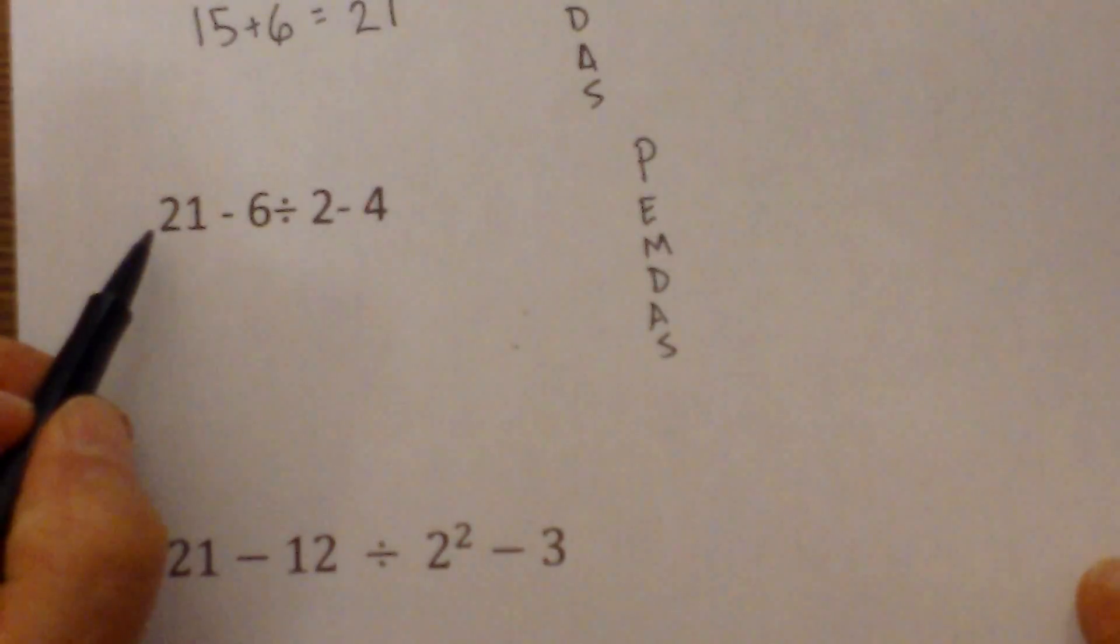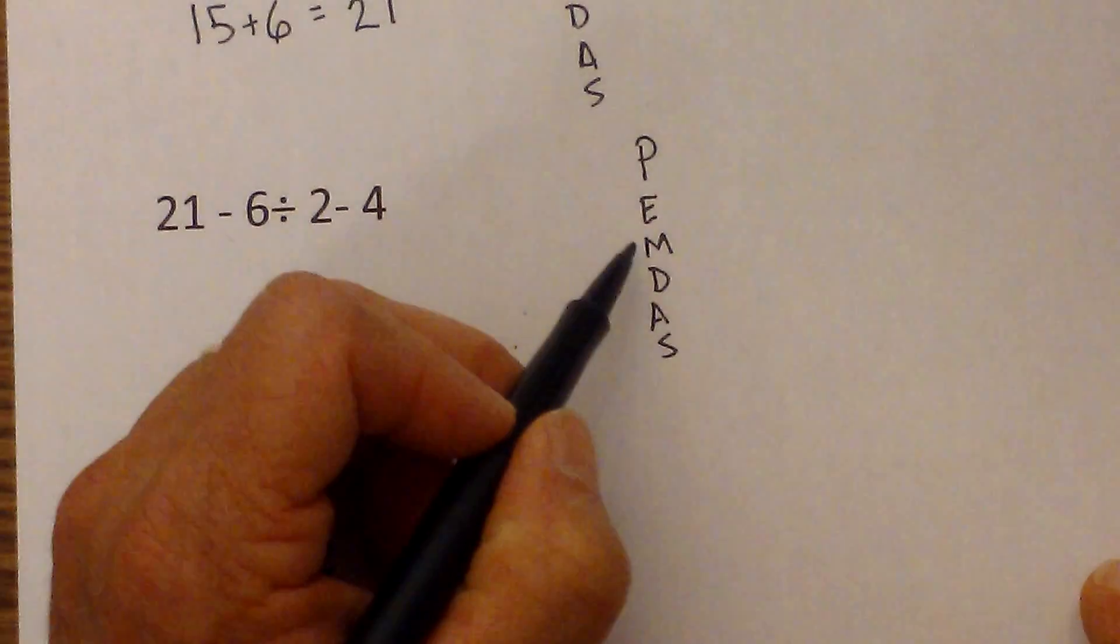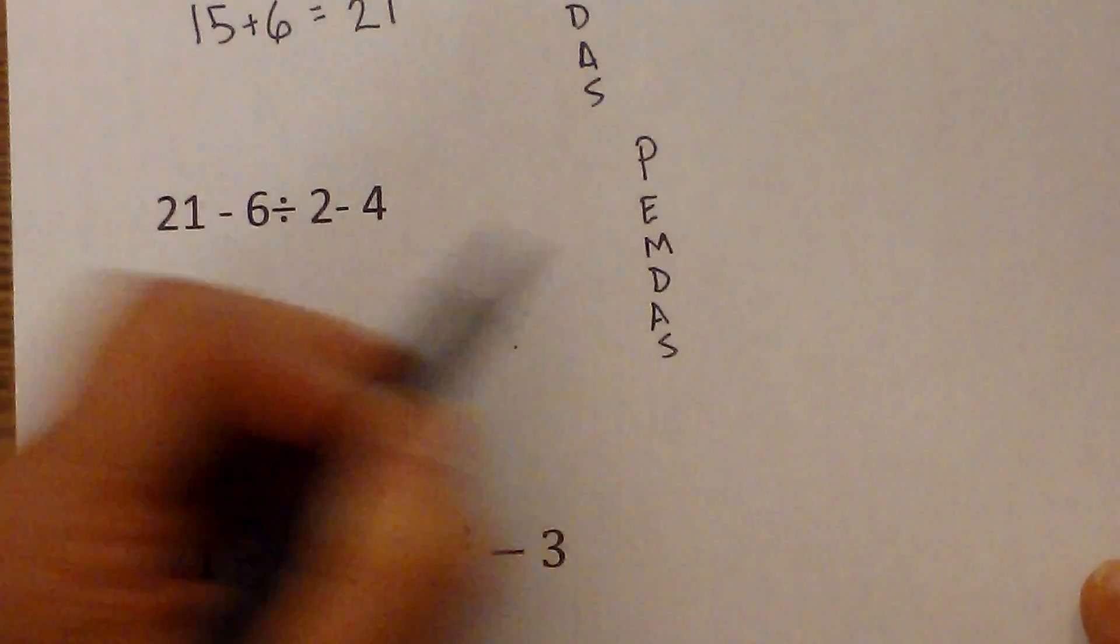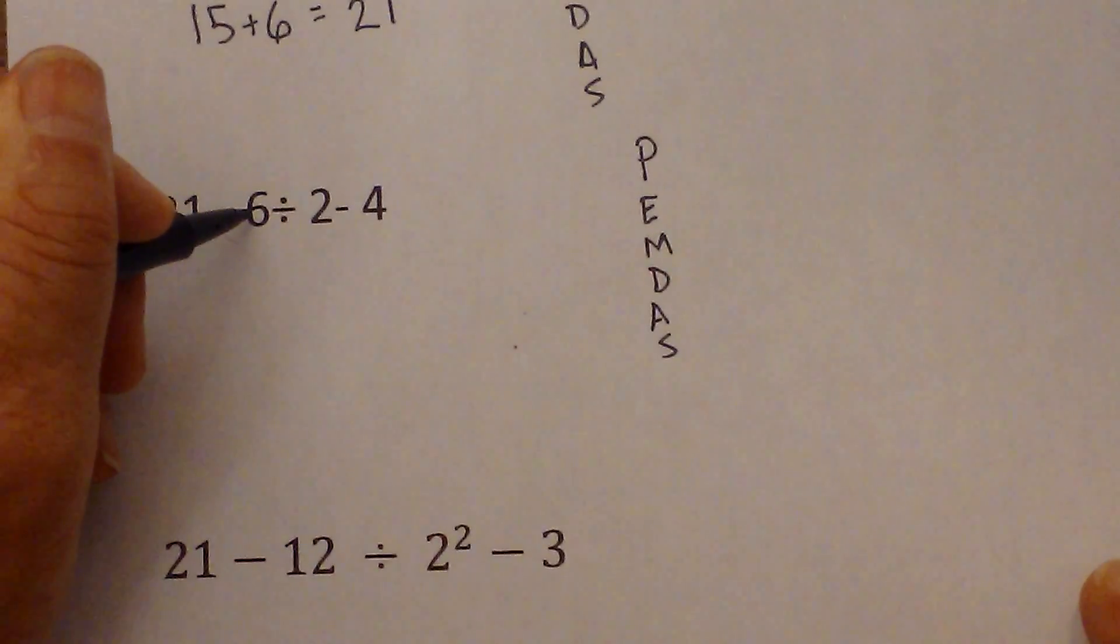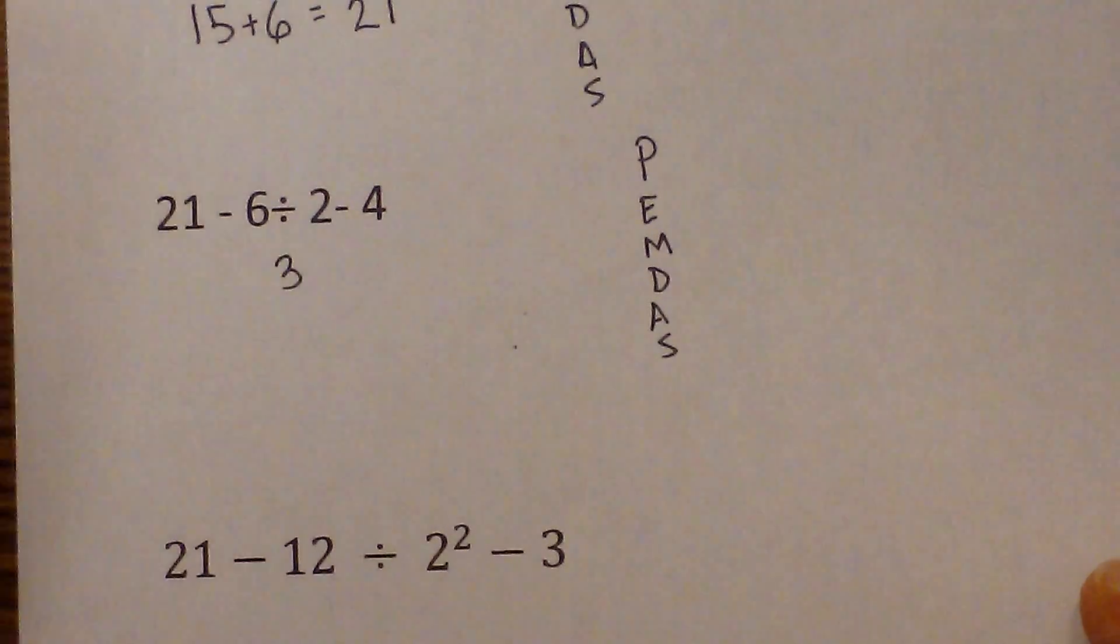And parenthesis? No. Exponents? No. Multiplication? No. Division? Yes. So I'm going to start here. 6 divided by 2 is 3.